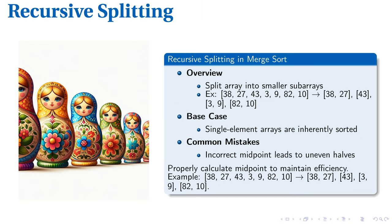The key to recursive splitting is dividing the original array into two smaller subarrays repeatedly. For instance, the array [38, 27, 43, 3, 9, 82, 10] splits into [38, 27, 43] and [3, 9, 82, 10]. Further splitting continues until single-element arrays are achieved. The base case in MergeSort is when you have single-element arrays, which are inherently sorted. A common mistake is incorrect midpoint calculation, leading to uneven halves and reduced efficiency. Properly calculating the midpoint ensures balanced subarrays. For an array of 7 elements, the correct midpoint is found using integer division of 7 by 2, yielding 3. This accuracy in splitting is essential for maintaining MergeSort's efficiency.